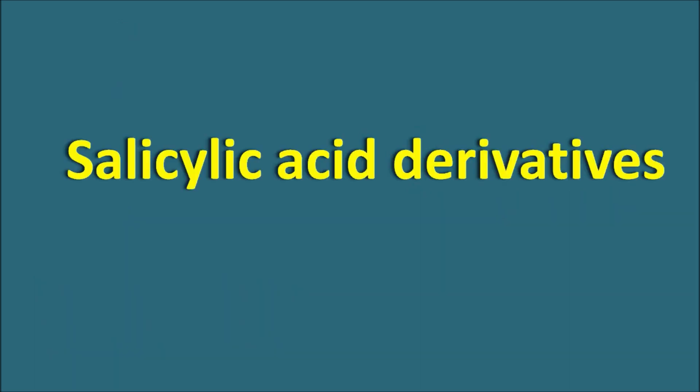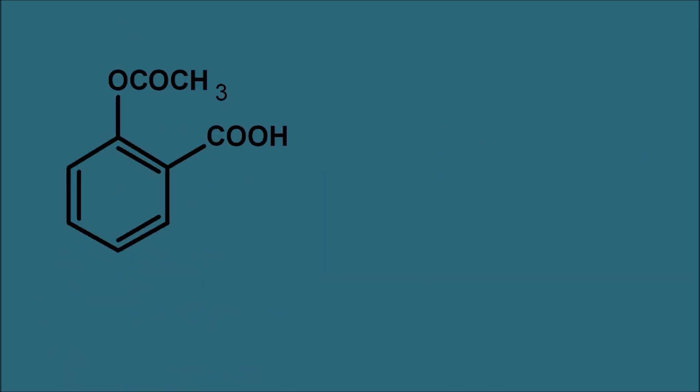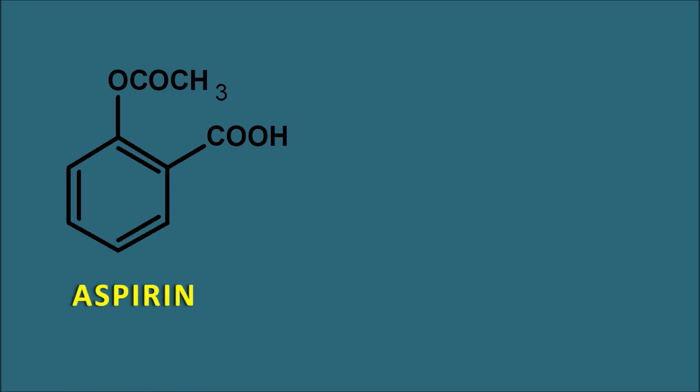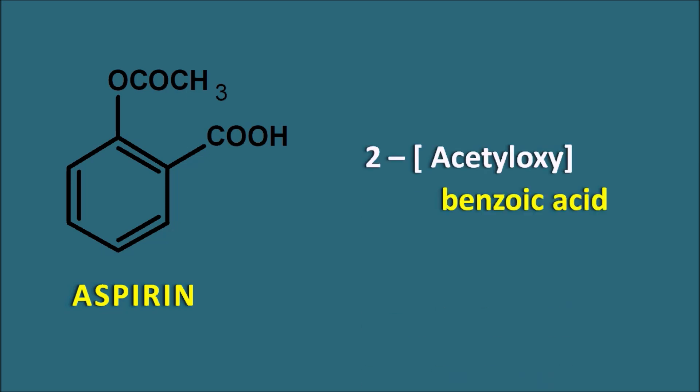The next class is the salicylic acid derivatives. One of the well-known drugs is aspirin. Aspirin is commonly known as acetylsalicylic acid, but the IUPAC name is 2-acetyloxybenzoic acid.